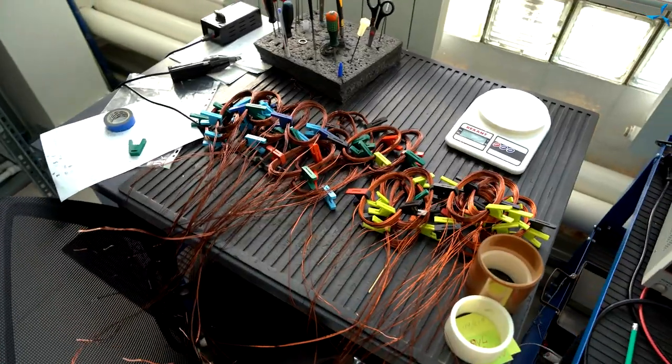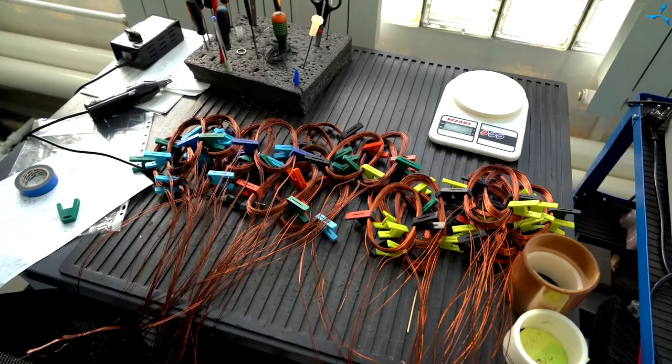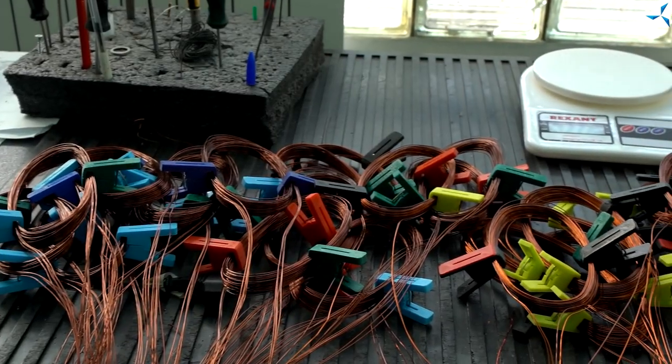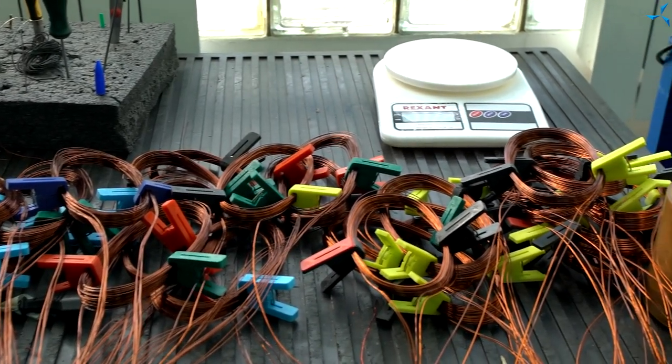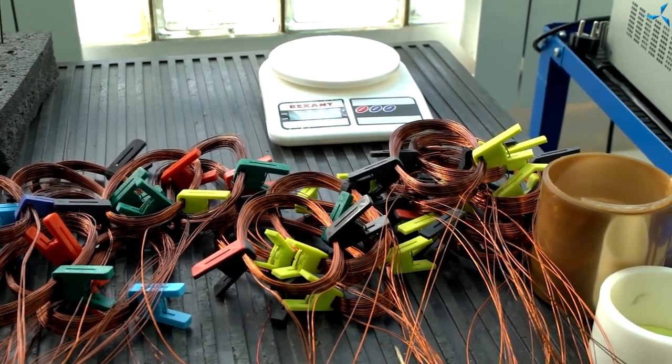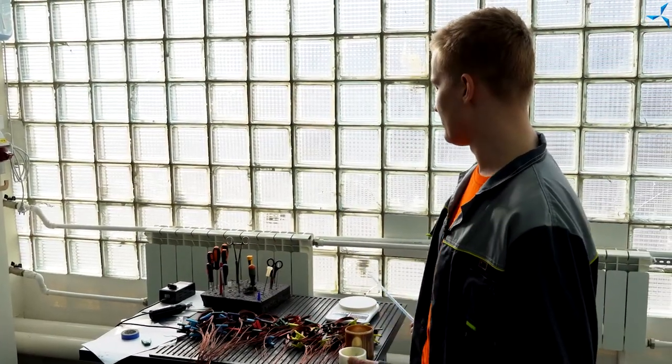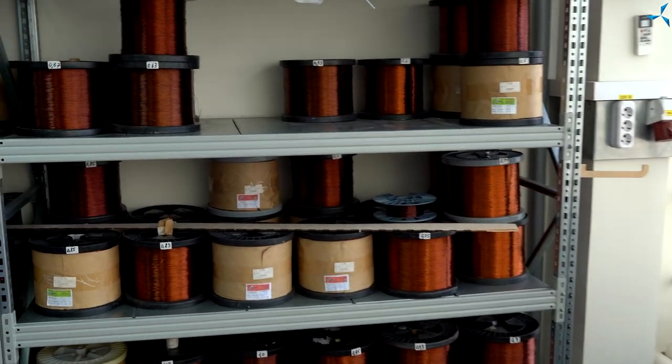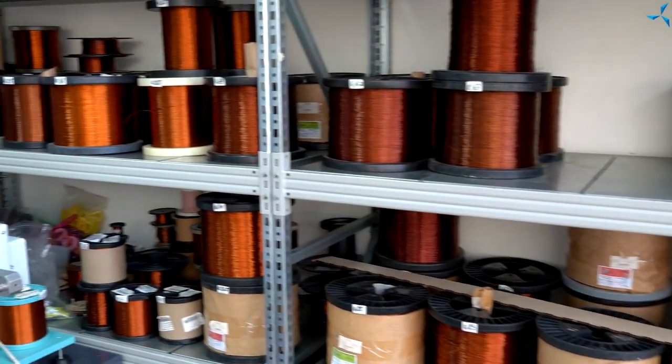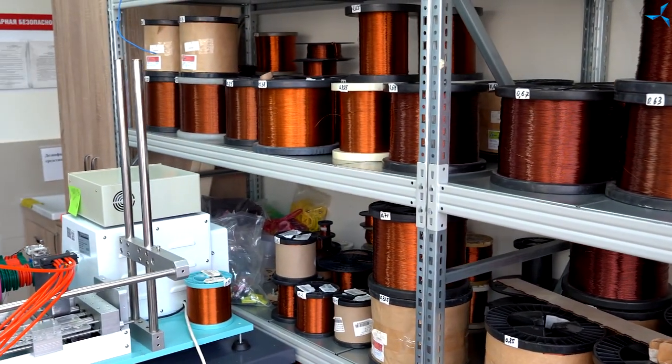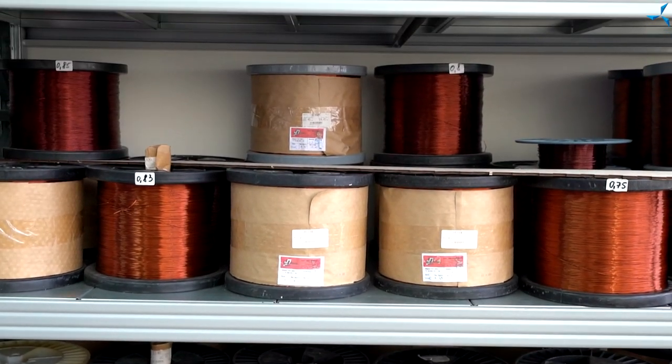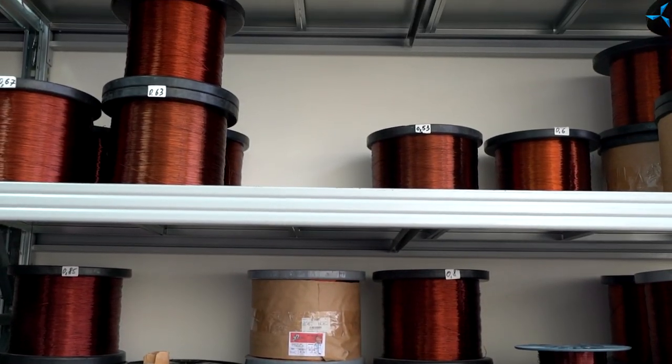On this table the prepared sections are presented. The wires have already been stripped with a mechanical stripper. They are in fact ready to be inserted into the stator slots. The rack contains a huge number of copper wire coils of various diameters, as well as electrical insulating materials, and much more.